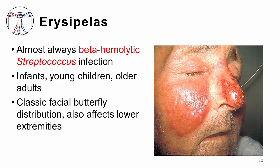There appears to be a bimodal age distribution, with the very young and the very old being the most commonly affected patients. The classic appearance of erysipelas is shown here as a butterfly rash over the face; however, statistically, the lower extremity is actually the most commonly affected site.